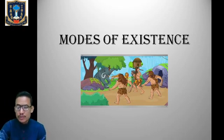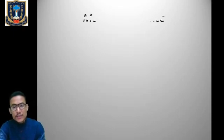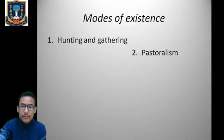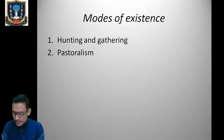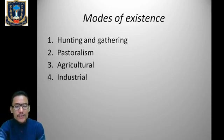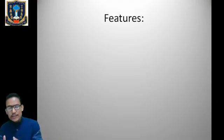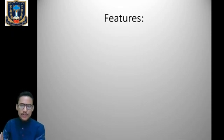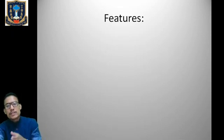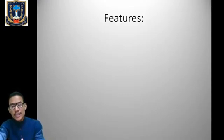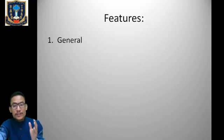Today we are going to learn about the different modes of existence. We have the first one called the hunting and gathering mode of existence. We have pastoralism mode of existence, agricultural mode of existence, and industrial mode of existence. These are the four different modes of existence.